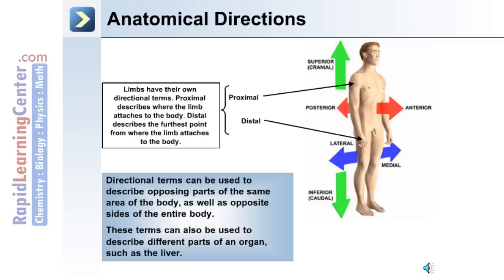Anatomy also includes directional terms such as superior — towards the head or cranial — and towards the feet, inferior or caudal. Anterior is the front and posterior is the back. Lateral means to the side and medial means towards the midline. For limbs, proximal describes the limb attachment point to the body — for example, for the upper arm, the shoulder region. Distal describes a point furthest away from that attachment.